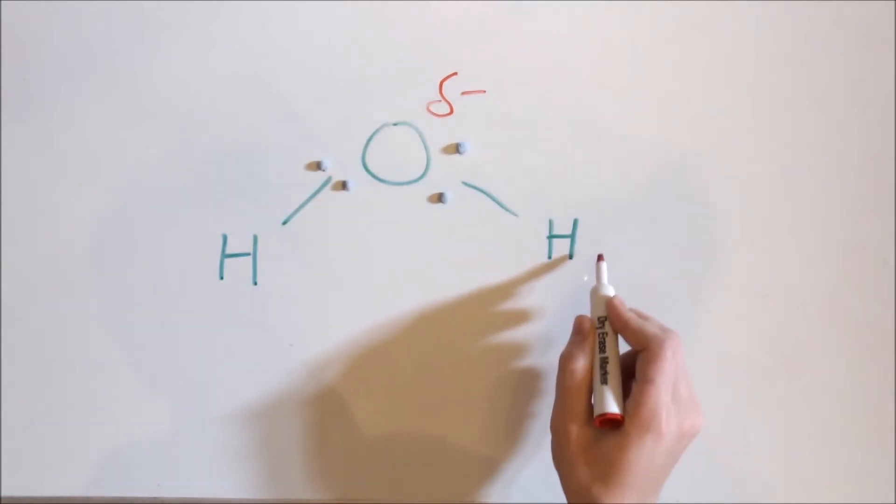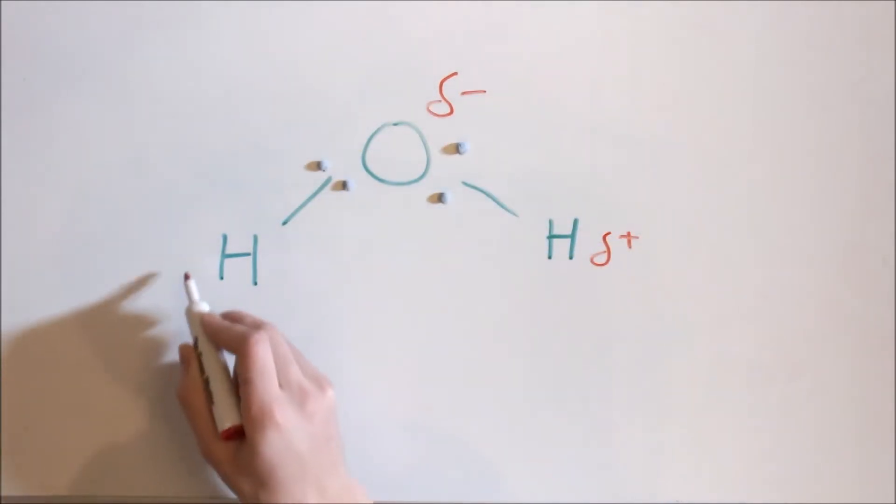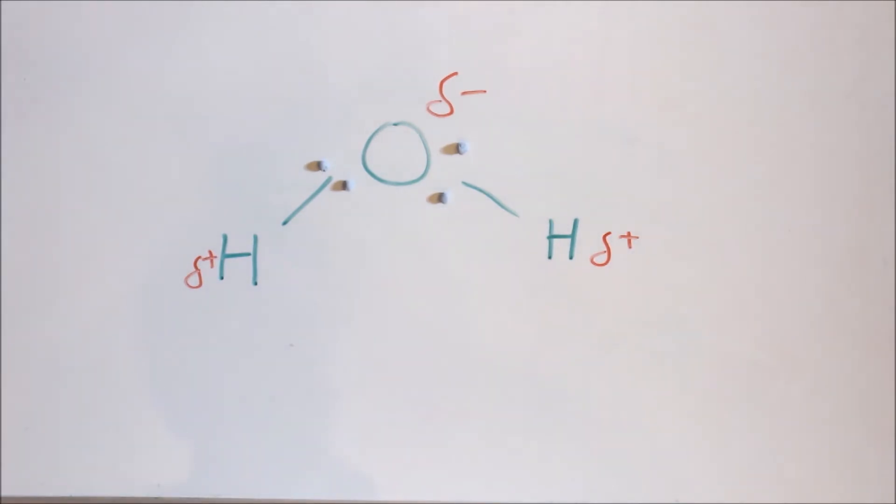The electrons are closer to the oxygen atom, making them slightly negative, and further from the hydrogen atoms, making them slightly positive.